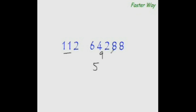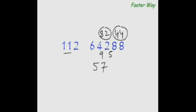The new dividend would be 92 minus 2 times 5, which is 10, so 92 minus 10 is 82. 11 goes into 82 seven times — 11 times 7 is 77 — leaving remainder 5. Our new dividend is 58 minus 2 times 7, which is 14, so 58 minus 14 is 44. 11 goes into 44 exactly 4 times, remainder 0. Our new dividend is 08 minus 2 times 4, which is 8, so 8 minus 8 is 0 — and you know that this is your answer.